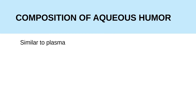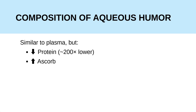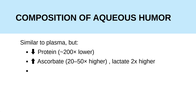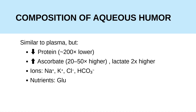Let's discuss the composition of the aqueous humor. It is pretty similar to plasma but there are some major differences. Regarding protein content, the protein in aqueous humor is about 200 times lower due to the presence of the blood-aqueous barrier.